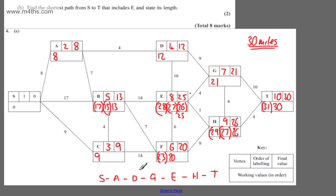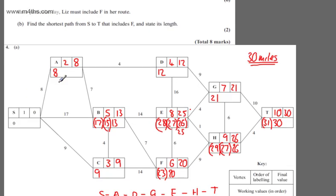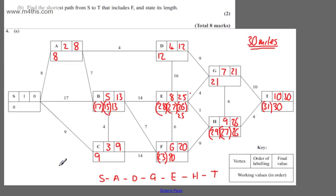So all I've done is written it out: you might want to write it as S to A, and so on. Either way, this is our shortest path. The shortest path is S to A to D to G to E to H to T, and it's 30 miles in length.